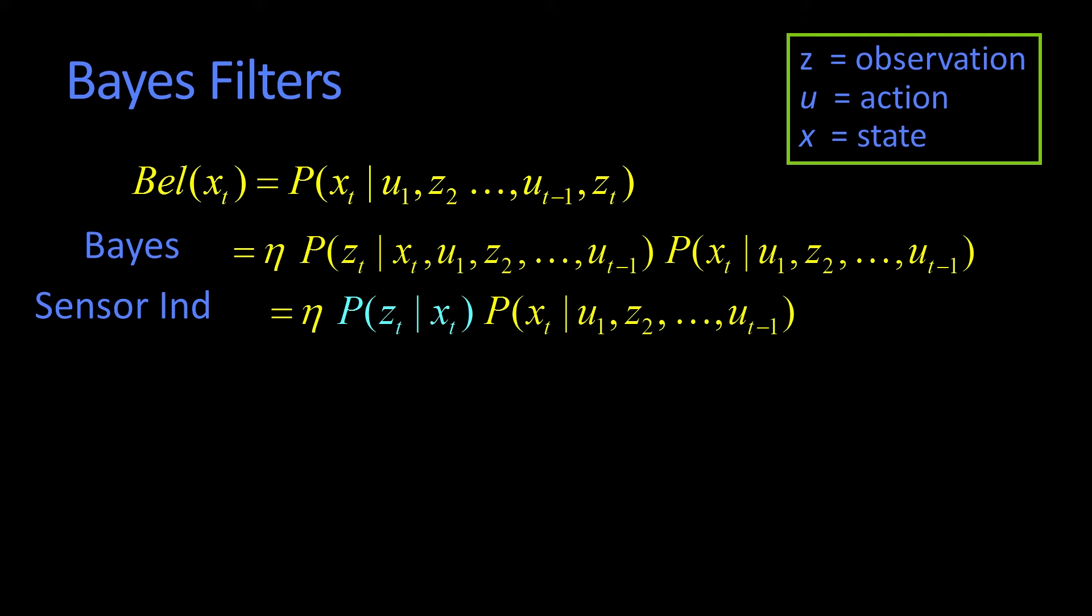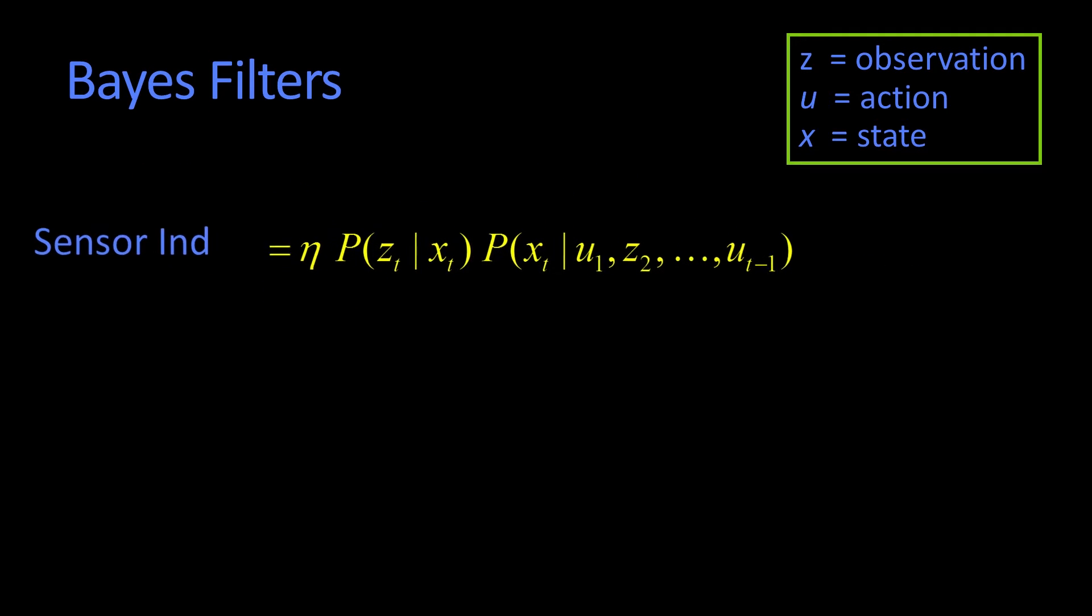Well, our sensor independence that we talked about before says, if you have the state xt, then none of this stuff matters. And it's just p of zt given xt, that's sensor independence.